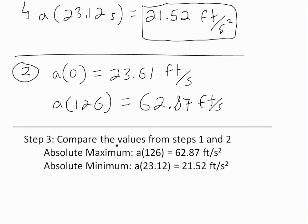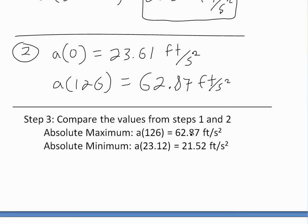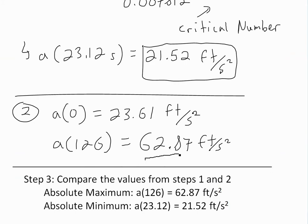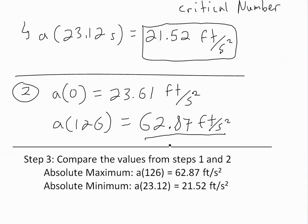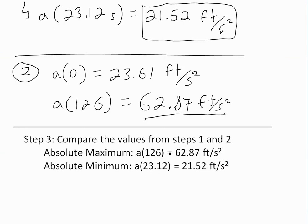So we compare the three values from steps one and two. The absolute maximum is this one right here at the final endpoint, just when it's jettisoning the rocket boosters, at the very end: 62.87 feet per second squared. So it's the largest acceleration.